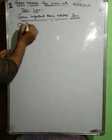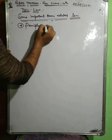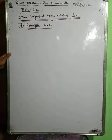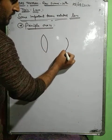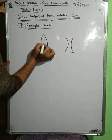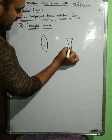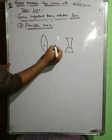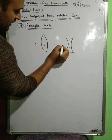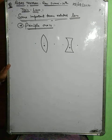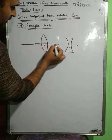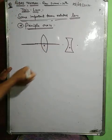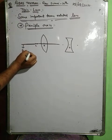The next term is principal axis. The imaginary line passing through the lens through the center of curvature and the optical center — this imaginary line is known as the principal axis.